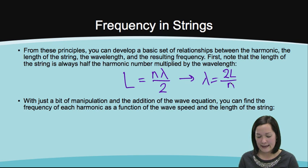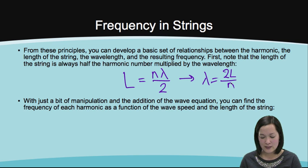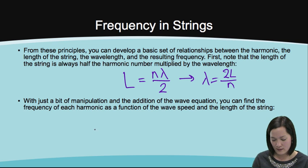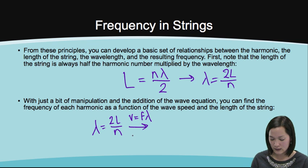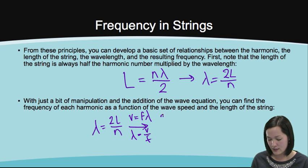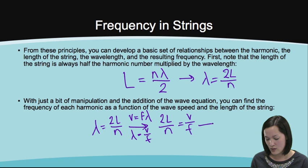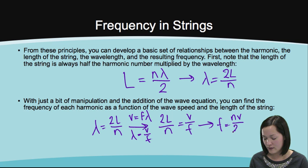With just a bit of manipulation and the addition of the wave equation, you can find the frequency of each harmonic as a function of wave speed and the length of the string. Lambda is equal to 2L over n, and using the wave equation v equals frequency times wavelength, or wavelength equals speed over frequency, we find that 2L over n equals v over f, or f is equal to n times v over 2 times L.